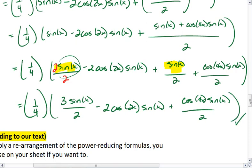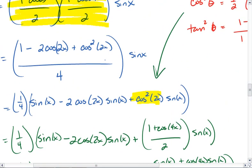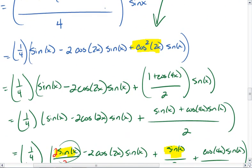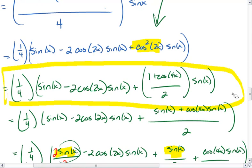And we're finally done. Quite a lot of work. But honestly, if you can at least get it down to here, where we no longer have any powers greater than 1 for sine or cosine, I'd be happy.